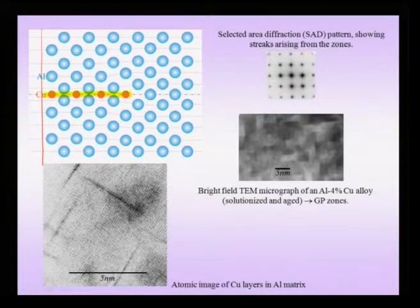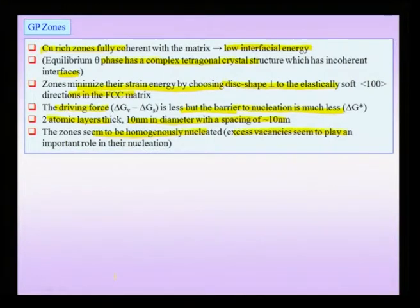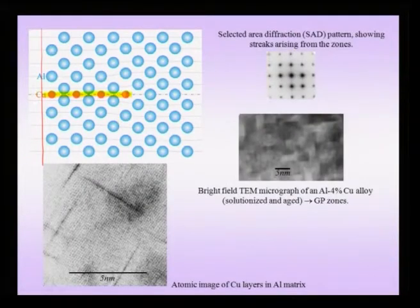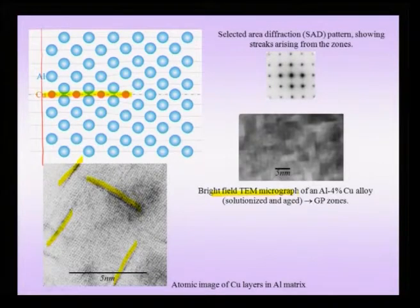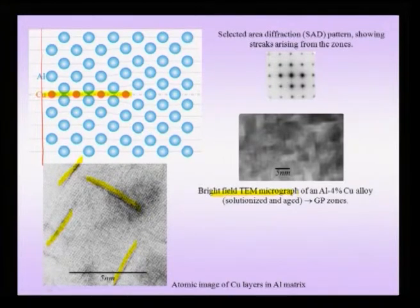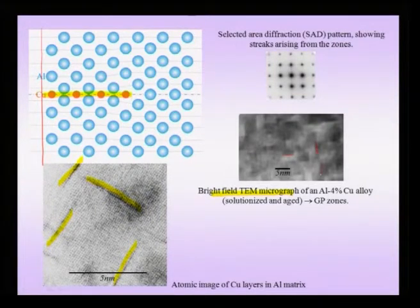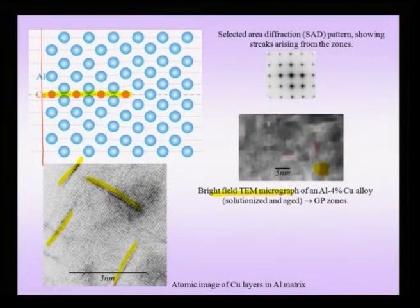Looking at the way they are present in the matrix, these thin copper layers — about 2 atomic layers thick, though the schematic shows only 1 atomic layer — are present in 2 perpendicular directions. In a bright field image of such a region containing GP zones, it is dominated by strain contrast. The dark and bright contrast is coming from the strain fields, so we are essentially imaging the strain fields.